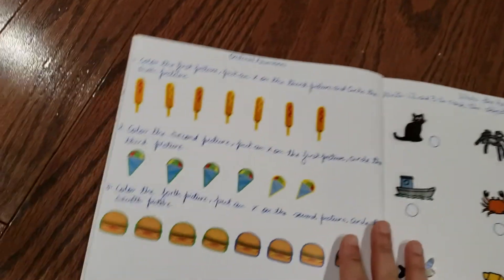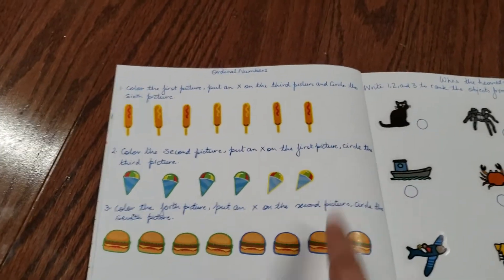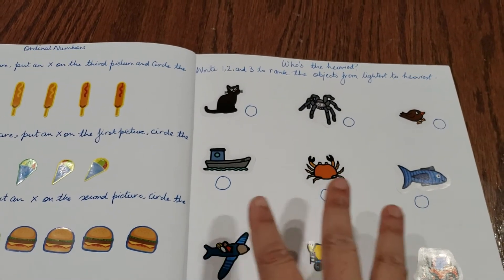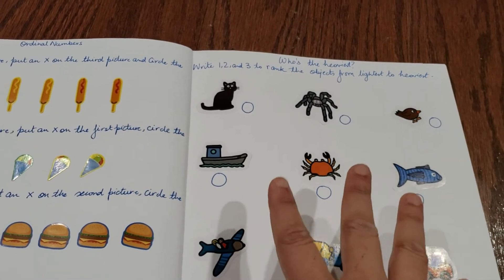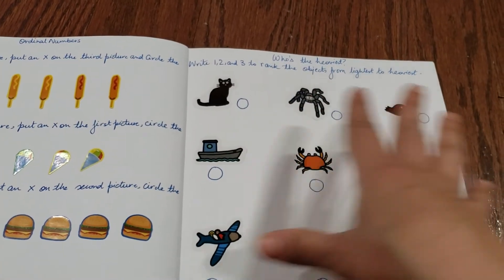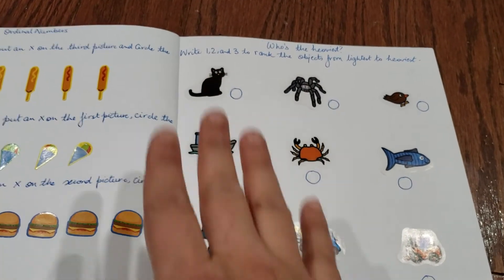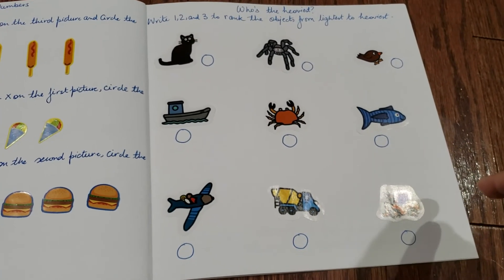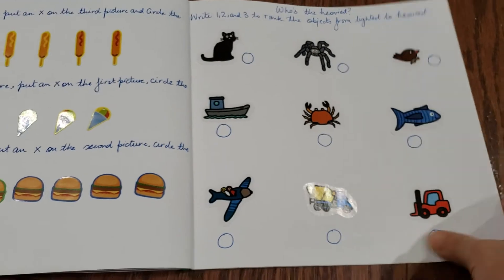We have ordinal numbers on this side. 'Who's the heaviest' is basically a gut feeling game - write one, two, three to rank the object from lightest to heaviest. There's a cat, spider, and a bird. He needs to have a gut feeling and write. There's a boat, crab, and fish. There's a glider, plane, truck, and crane.